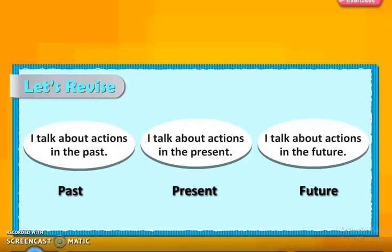Today we have covered three tenses: simple past tense, simple present tense, and simple future tense. Now, exercises A, B, C, and D are there. The exercise PDF file will be sent. Exercise A and Exercise C you have to do in your textbook only. Exercise B and Exercise D you have to write in your English notebook, because they need more space. There are also blank boxes given for past, present, and future.